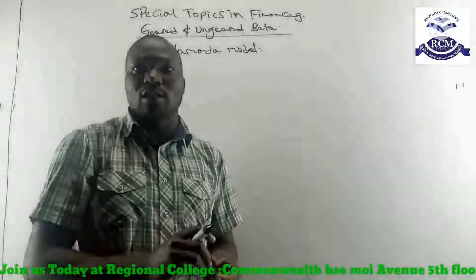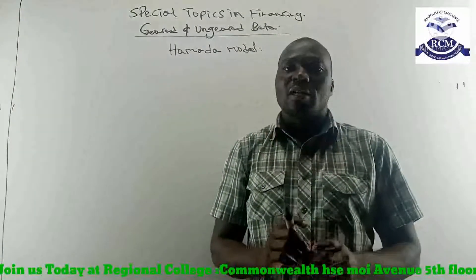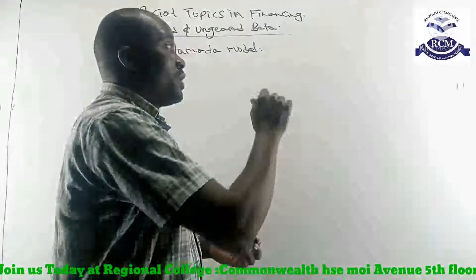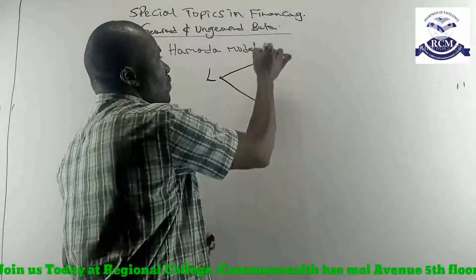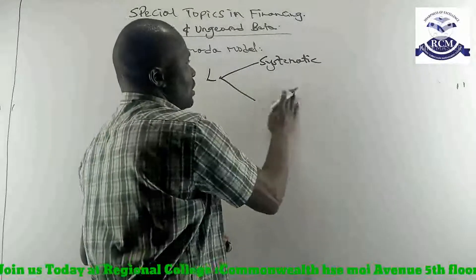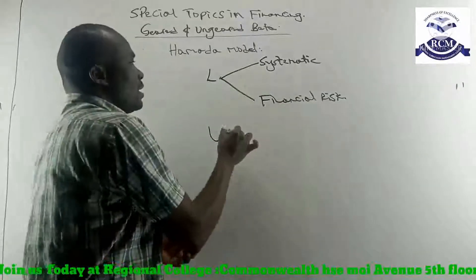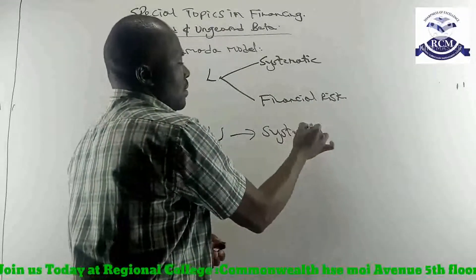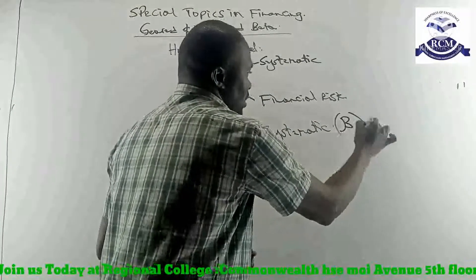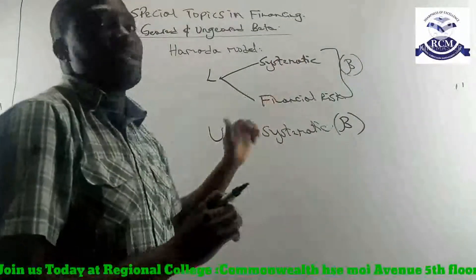A geared firm is a firm that has debt in its capital structure. An ungeared firm has no debt — it's all equity financed. The beta factor for a firm without debt is always lower than the beta factor for a firm with debt because of two concepts: if levered, I have both systematic risk and financial risk because of debt. But if unlevered, I only have systematic risk.